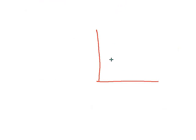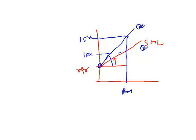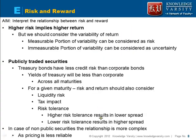Think of it as your Security Market Line. This is your RFR — think of the slope. What happens is we have two periods. Suppose the beta of the product is one — sometimes people want a 10% return, sometimes people want a 15% return. Nothing has changed; RFR is same. Only the degree of risk aversion has changed. The blue line has a higher degree of risk aversion, or lower risk tolerance, and the red line has higher risk tolerance — people are willing to take a lower return for the same level of risk. So higher risk tolerance means lower spread; lower risk tolerance means higher spread.